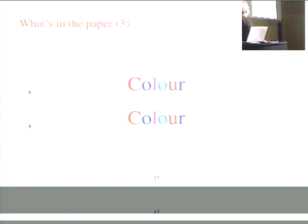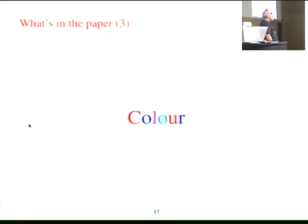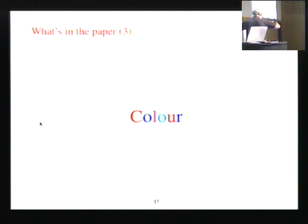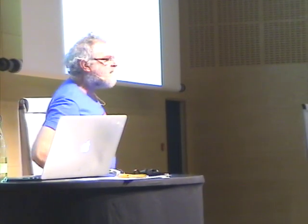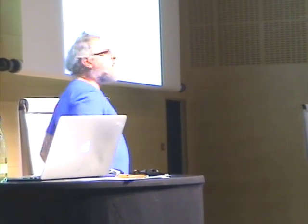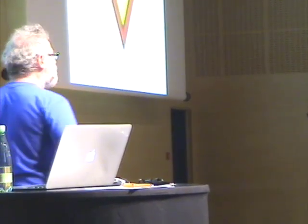Last thing in the paper: color. You'll notice I used color very carefully in all the proofs. Don't read the paper in the proceedings — it's in black and white. Download it from the web; it's in color. So in conclusion, let's go back where we started. Our foundations of lambda calculus have magically become foundations for process calculus. Thank you very much.